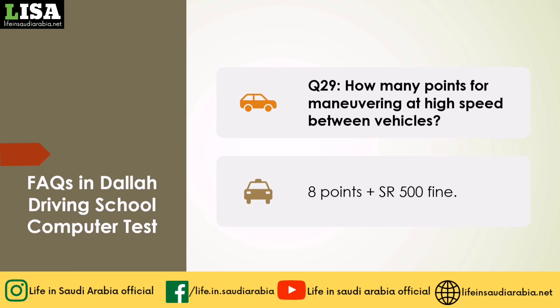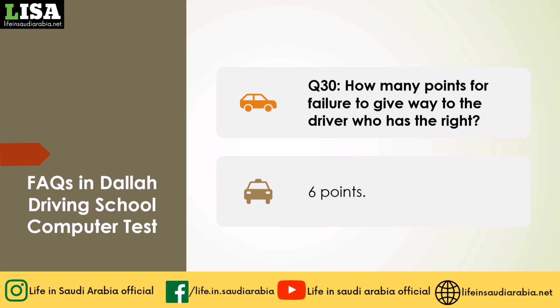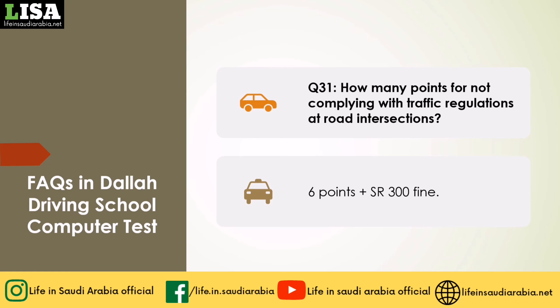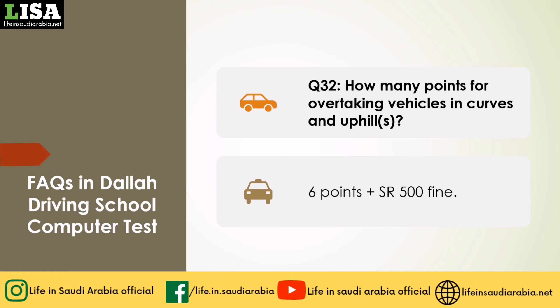Q30: How many points for failure to give way to the driver who has the right? Answer: 6 points. Q31: How many points for not complying with traffic regulations at road intersections? Answer: 6 points plus SAR 300 fine. Q32: How many points for overtaking vehicles in curves and uphills? Answer: 6 points plus SAR 500 fine.